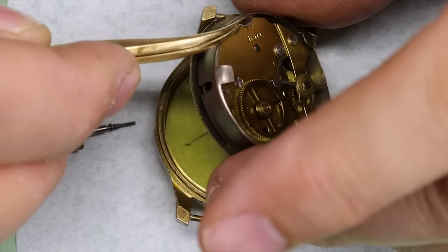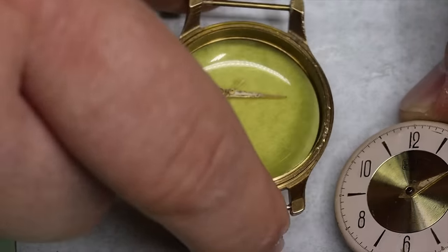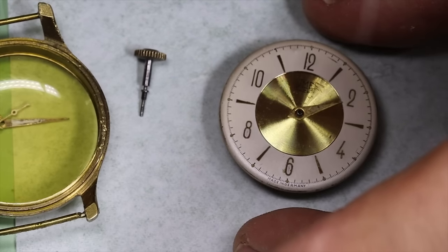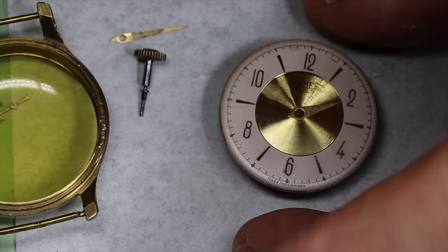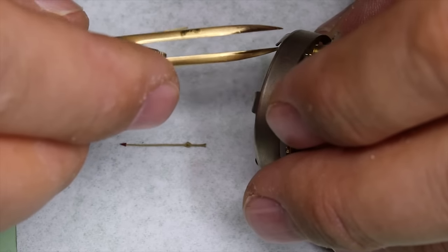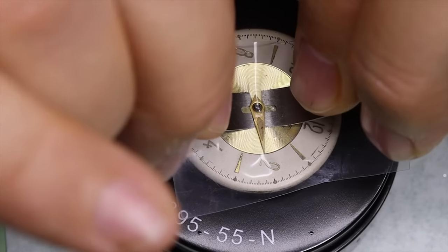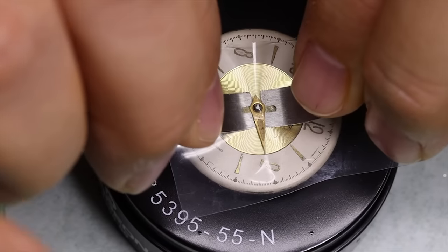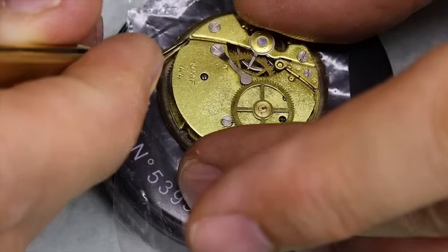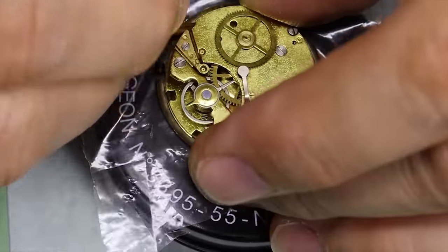So I think it's quite obvious already that this would be, let's call it a budget watch. We see when we get the crystal off that the dial is actually in pretty nice condition. It has a little bump just to the left of the 12 o'clock marker, looks like a dial foot imprint. The dial is secured to the movement with a couple of very rudimentary clamps.